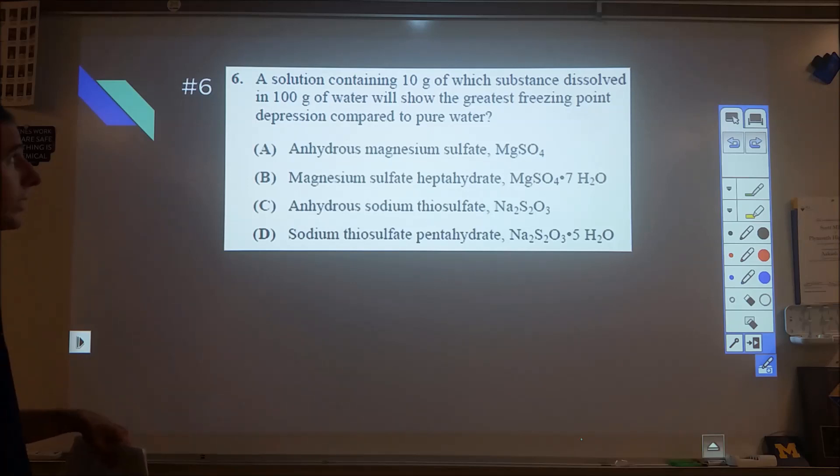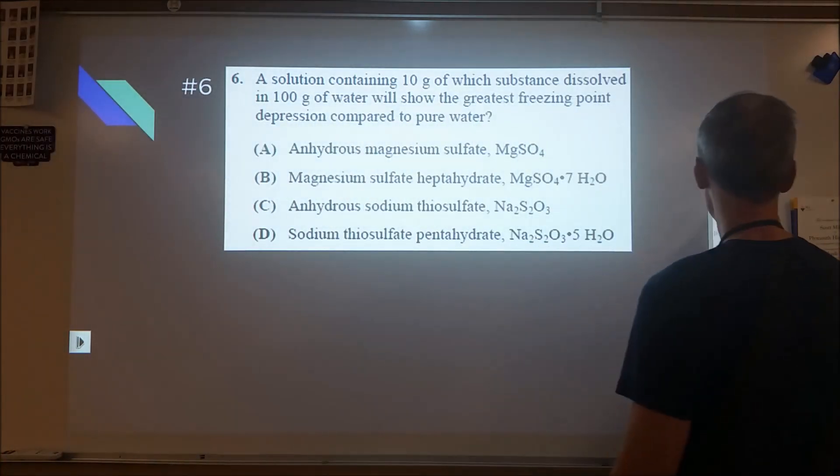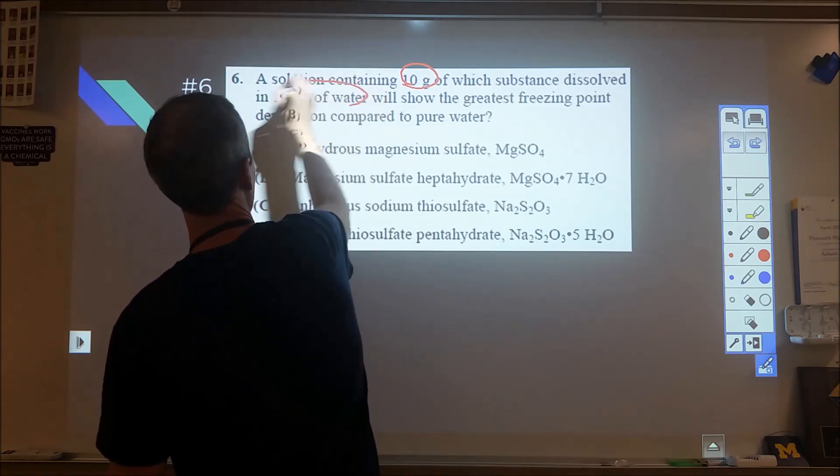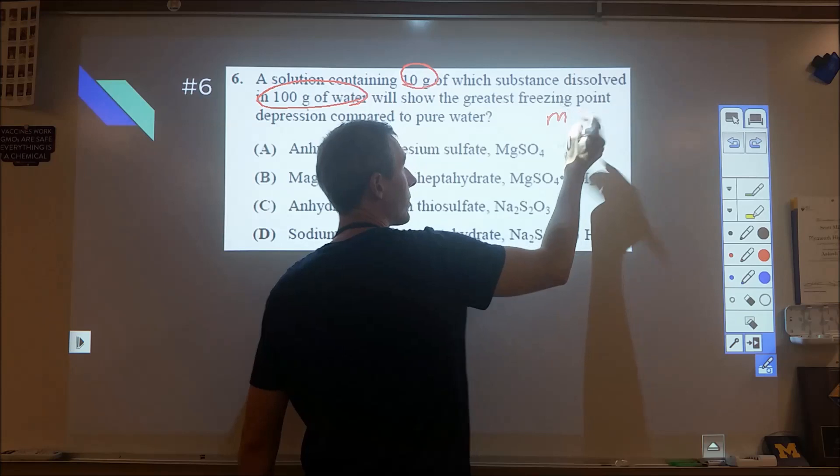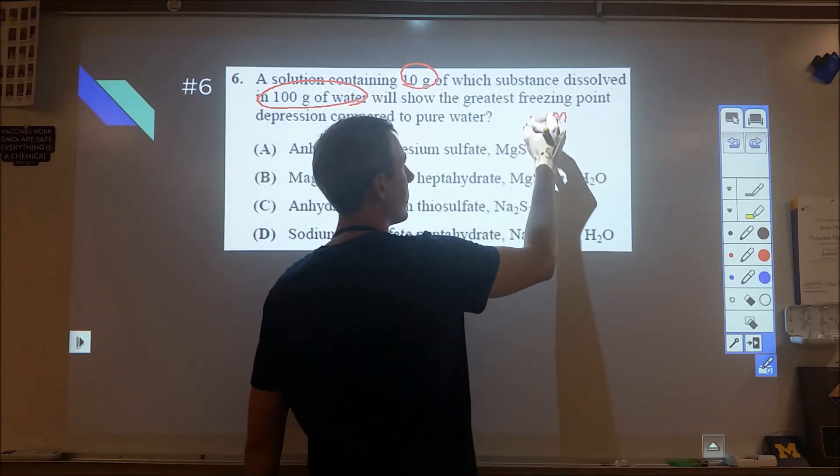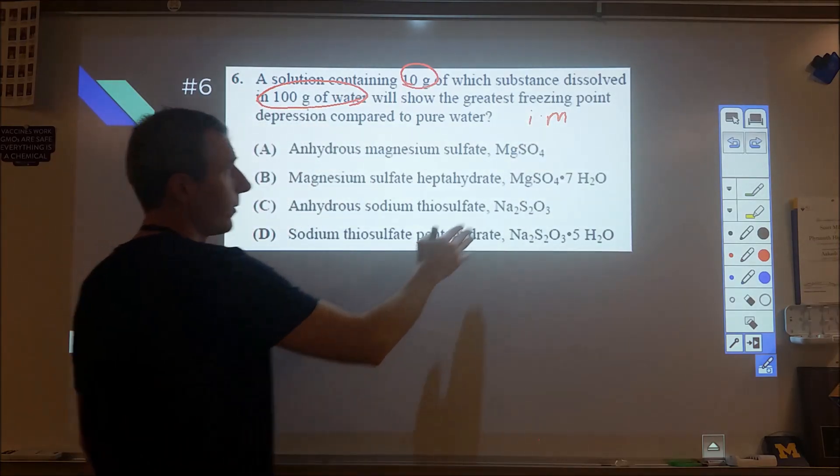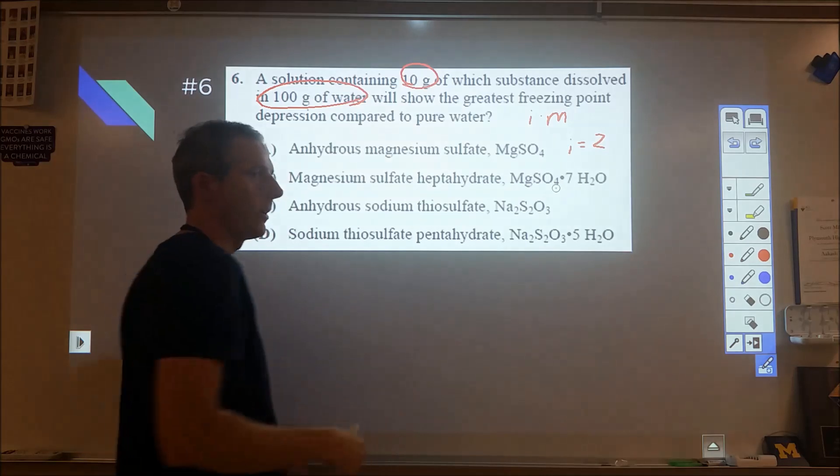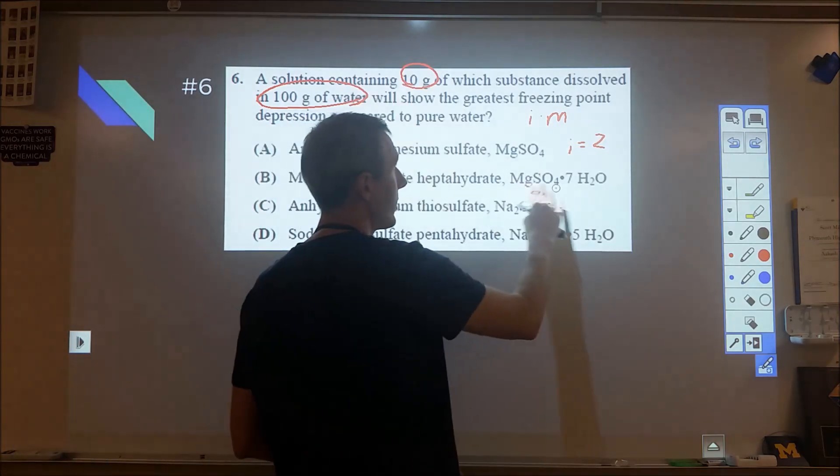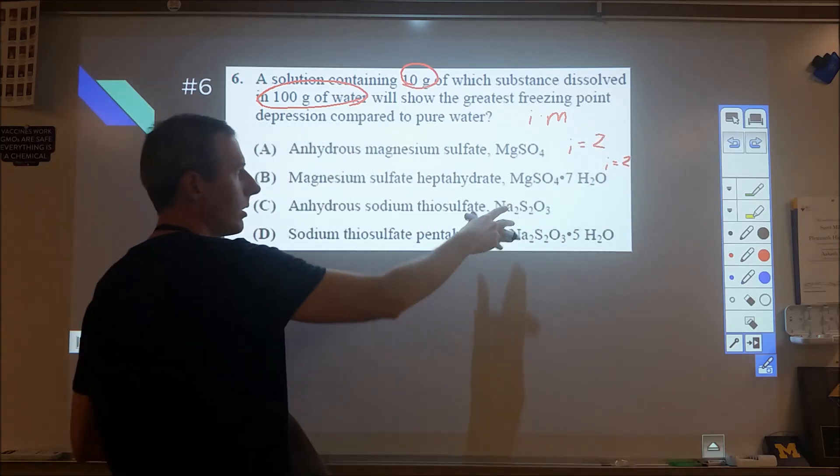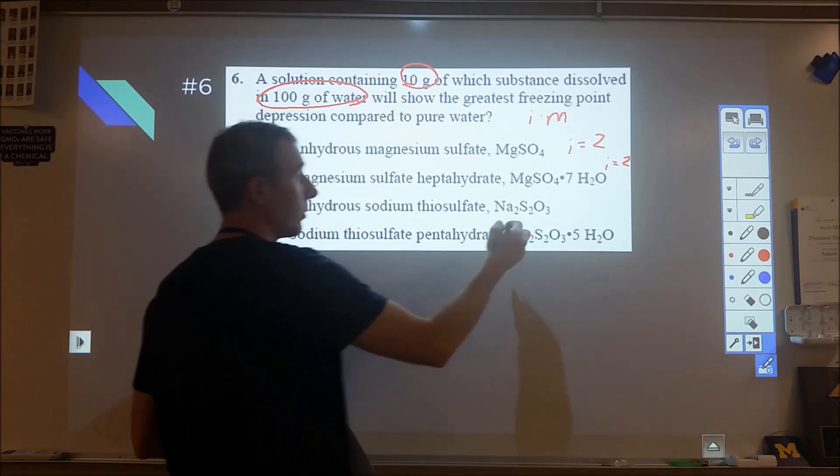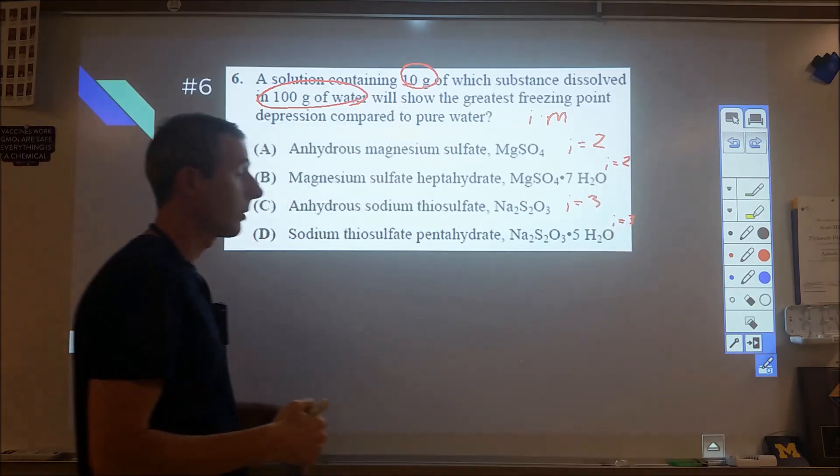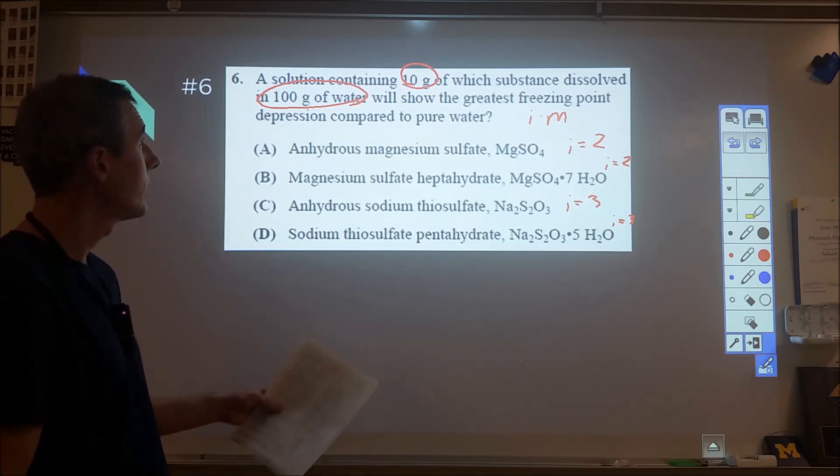Number six, we're looking for greatest freezing point depression. 10 grams in 100 grams of water. Freezing point depression depends on concentration and molality, and also your Van't Hoff factor. Magnesium sulfate has a Van't Hoff factor of two, dissociating into magnesium ion and sulfate ion. This one's Van't Hoff factor is also two. But sodium thiosulfate produces two sodium ions and one thiosulfate, so it has a greater impact. It produces more ions for the same number of moles.